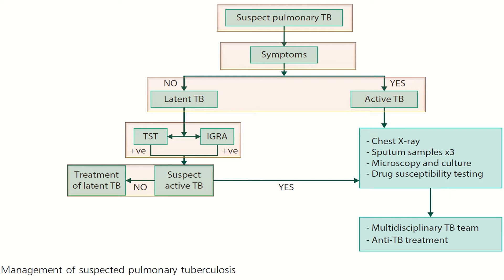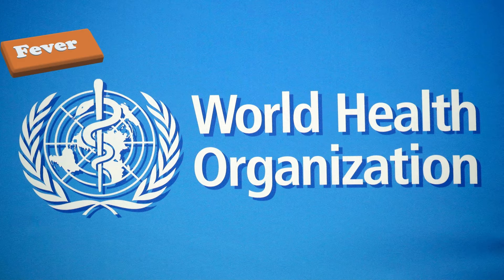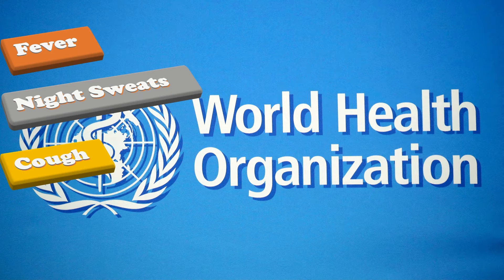In the case of active tuberculosis, we perform a chest X-ray, sputum samples are taken three times, microscopy and cultures are performed, and drug susceptibility testing is done. After that, we involve the multidisciplinary TB team and anti-tuberculous treatment is initiated. The WHO suggests a four-symptom screening including fever, night sweats, cough, and weight loss.